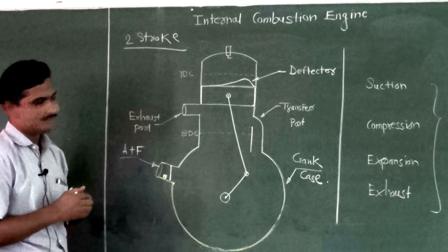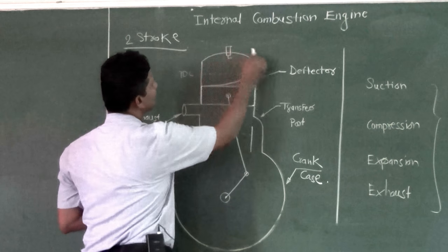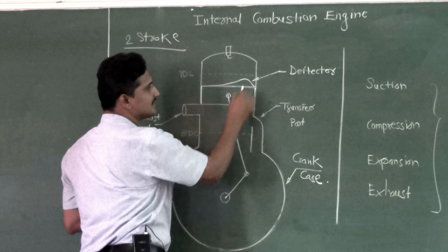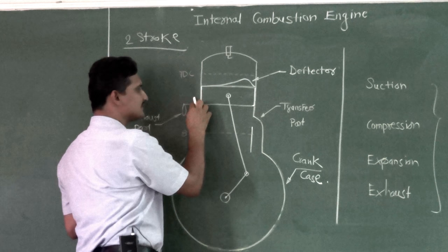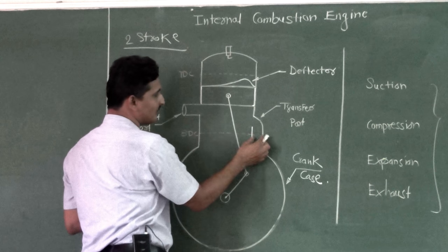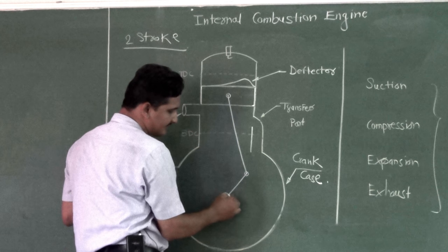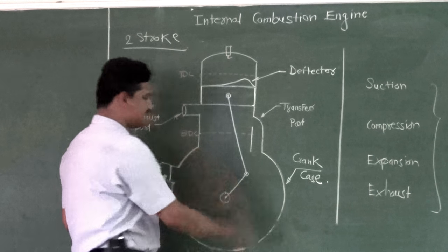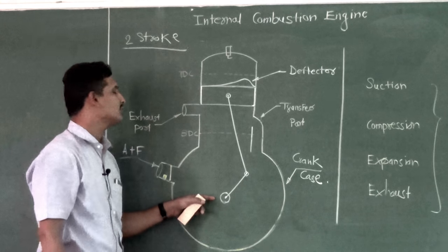To summarize the parts: we have the cylinder, the piston with a deflector on top, the exhaust port, the transfer port, the connecting rod, the crank, and the crankshaft. Power output is taken from the crankshaft.